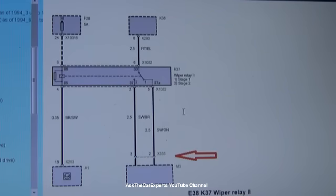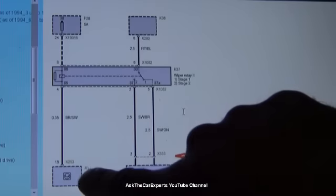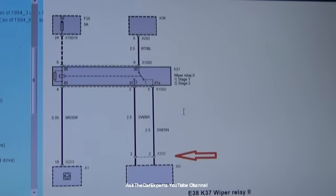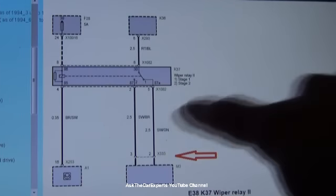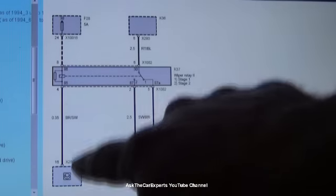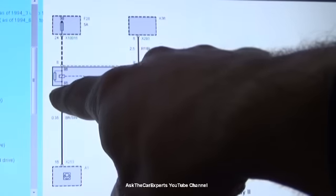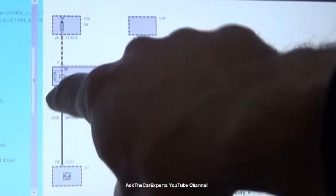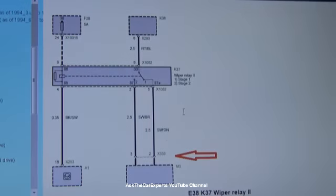And unfortunately in some rare cases, it could also be the general module because that is the activation side. Now, how do you test the general module? You could activate the wiper and you'd be looking for at pin 4, you could do it there on like back probe, you'd be looking at like a ground signal.